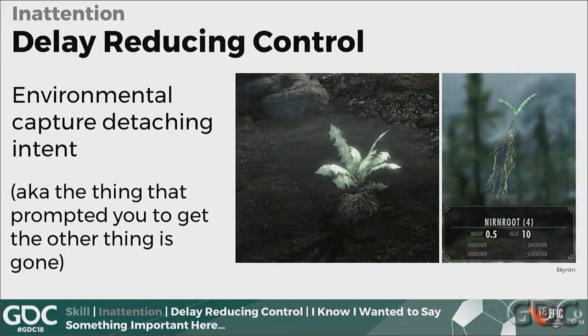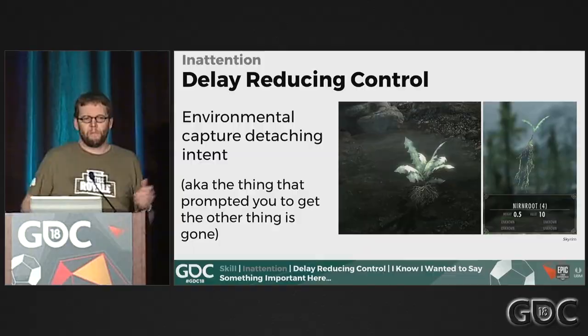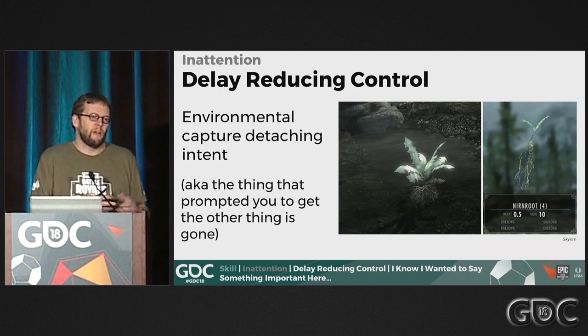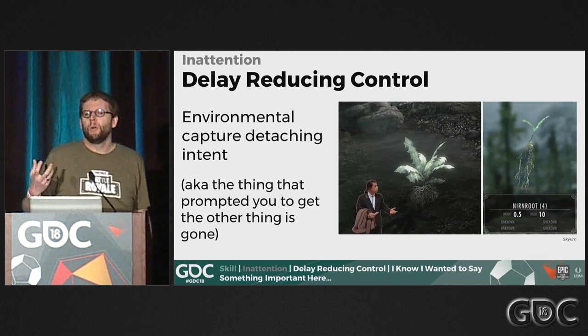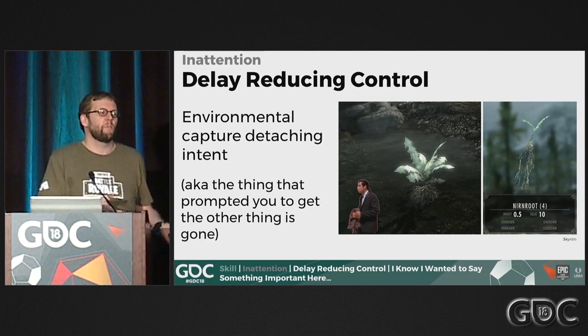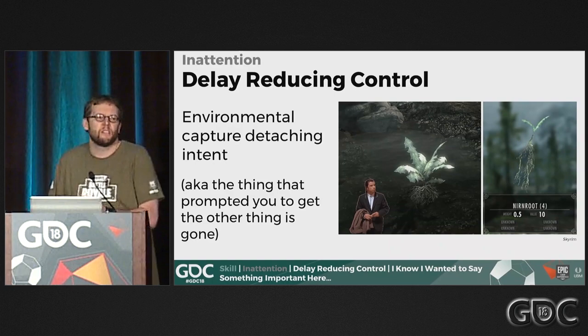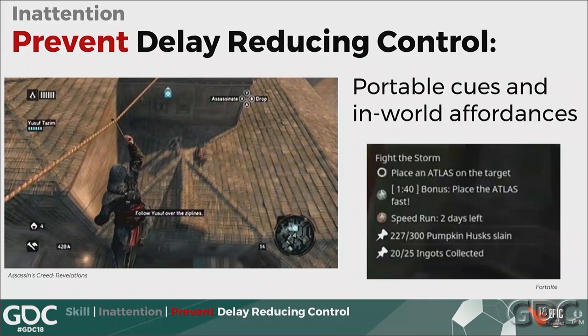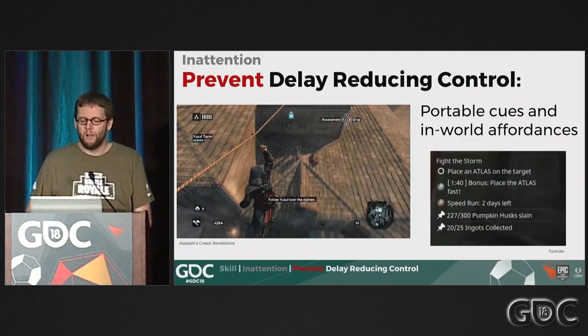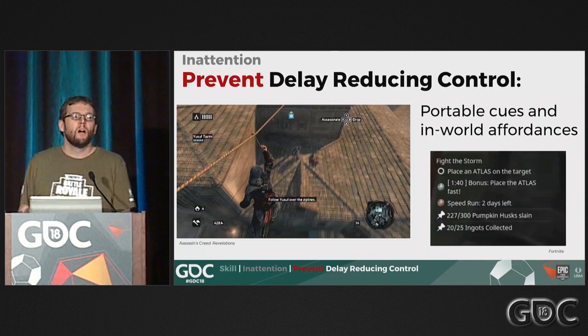Delay reducing control — imagine you're a wizard in Skyrim making a potion, you work out you need Nirn root, go out to the field to collect it, and then you're like, 'why am I here again?' The cue you had back in your laboratory of no Nirn root is now missing when you're in the field. To prevent this, it's very common nowadays to carry affordances and cues with you. In Assassin's Creed, they always show the in-context action you can take. In Fortnite, you can pin quests or activities so you always know what you need to be doing.